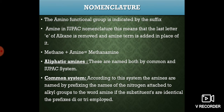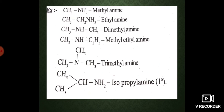Aliphatic amines are named by both the common and IUPAC systems. In the common system, amines are named by prefixing the names of alkyl groups attached to nitrogen to the word 'amine'. If substituents are identical, prefixes di- or tri- are used. Examples include methyl amine, ethyl amine, dimethyl amine, and methyl ethyl amine.